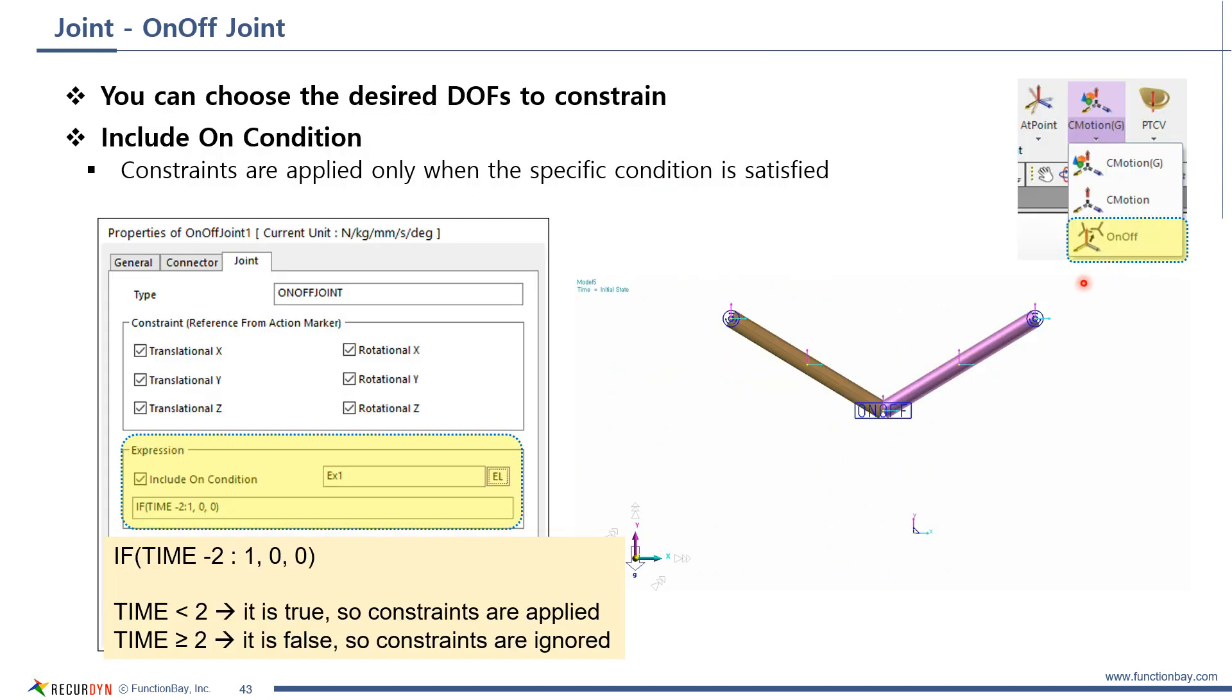On-off joint is quite an interesting joint. You can choose the desired degrees of freedom to constrain, like this. In addition, it is possible to apply the constraints only when the specific condition is satisfied, like this.